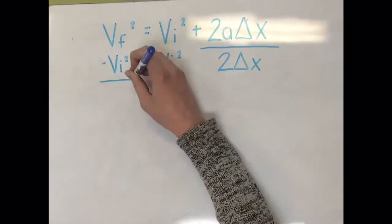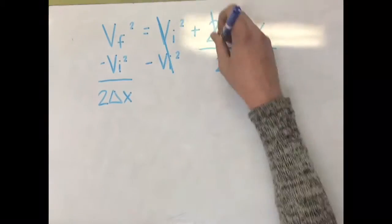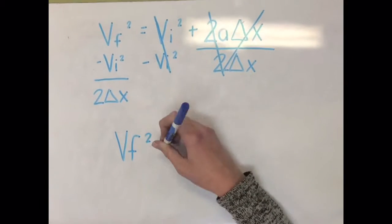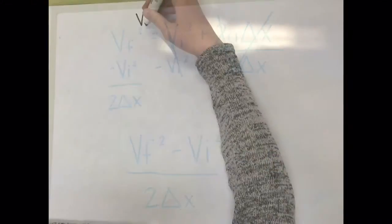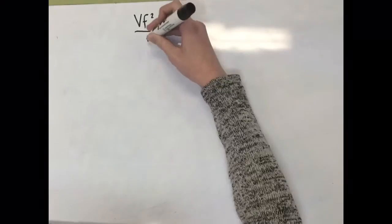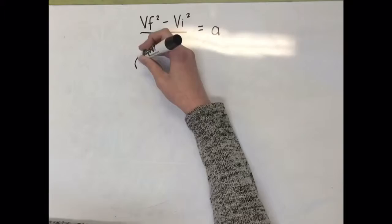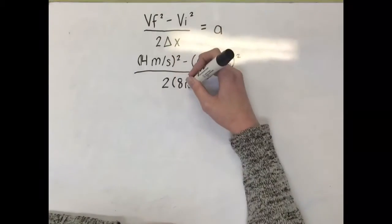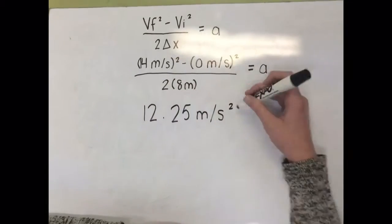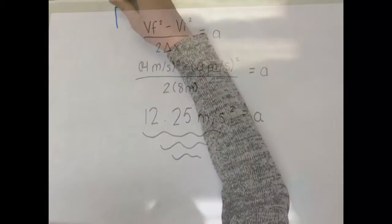If we rearrange that to make one side of the equation equal the acceleration, then it will look something like Vf squared minus Vi squared all over 2 delta x equals the acceleration. Then we can plug our numbers in: 14 meters per second squared minus 0 meters per second squared all over 2 times 8. We can come to the conclusion that the acceleration is 12.25 meters per second squared.